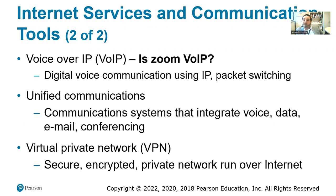Unified communication means that in the past, voice or phone companies provided voice services separately from data and internet service companies, and conferencing and email were separate. Now there is unified communication — all those services can be provided by one provider. Then we have virtual private network (VPN), which uses tunneling to secure and encrypt private networks run over the internet.